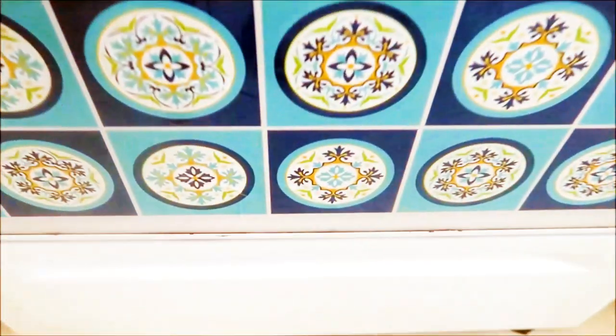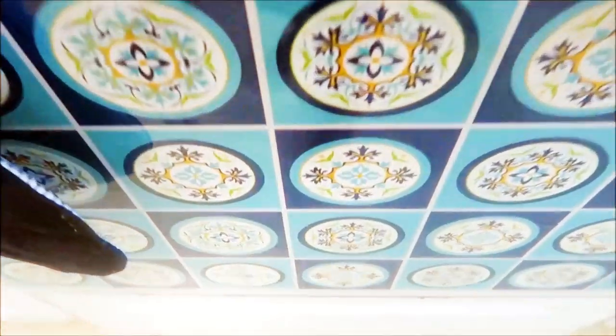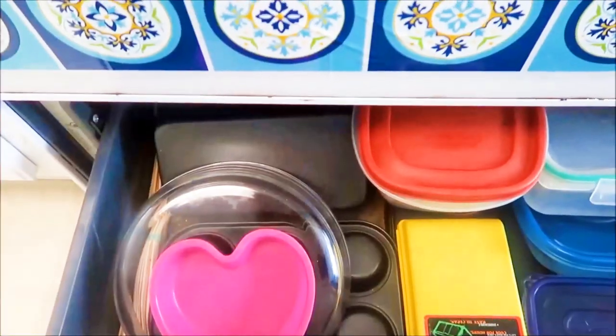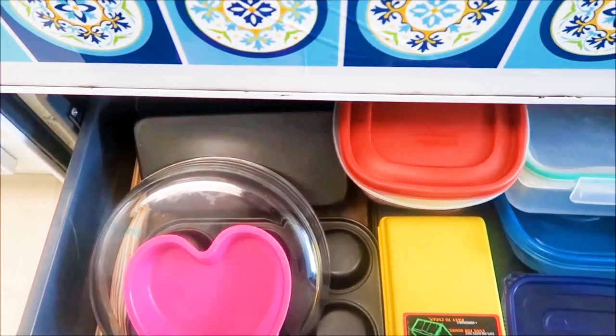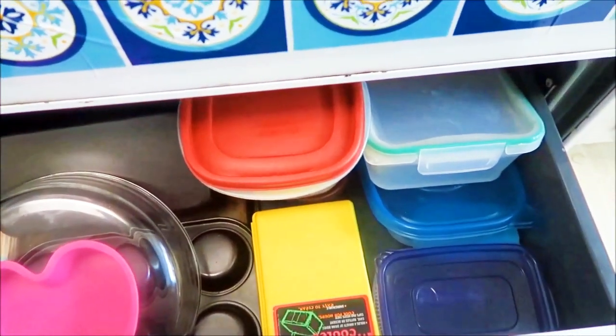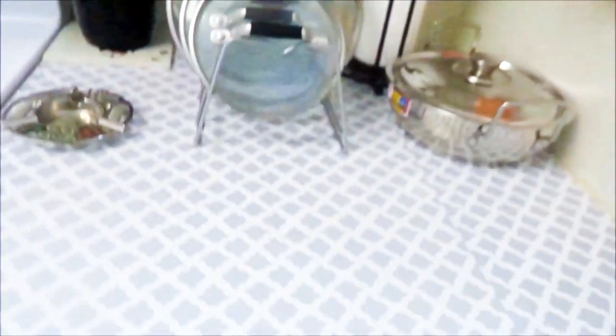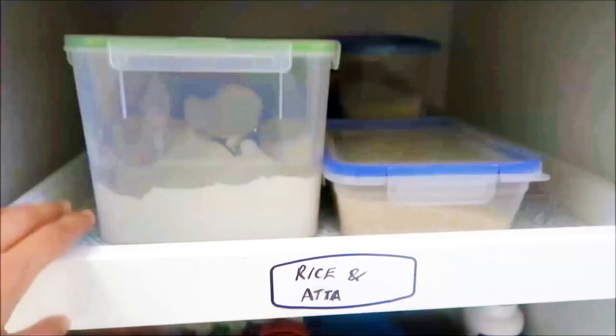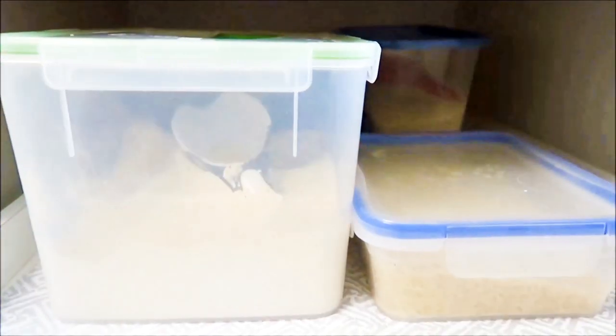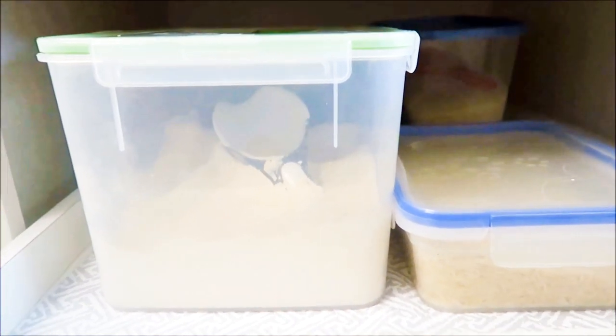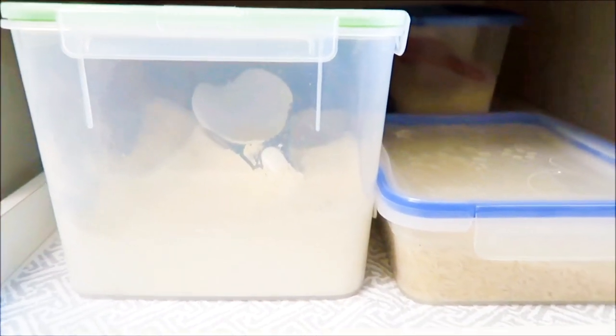Under the gas stove we have the oven here, and under that I've stored my baking utensils and some Tupperware storage containers. In this cupboard, in this section I have rice and atta. Since we use it every day, it's easier to keep on this sliding rack.